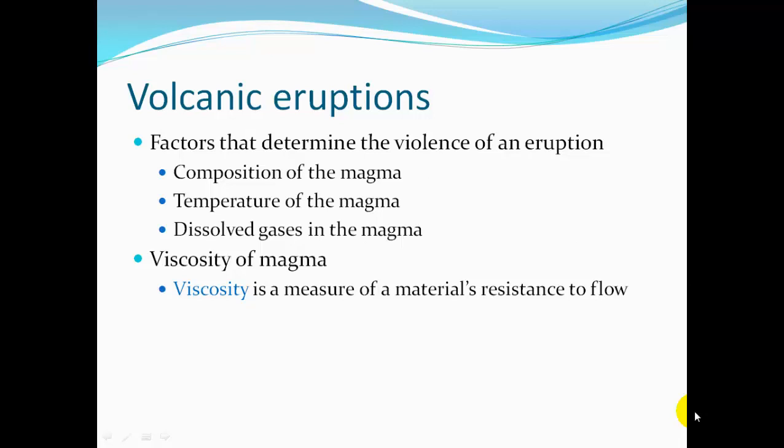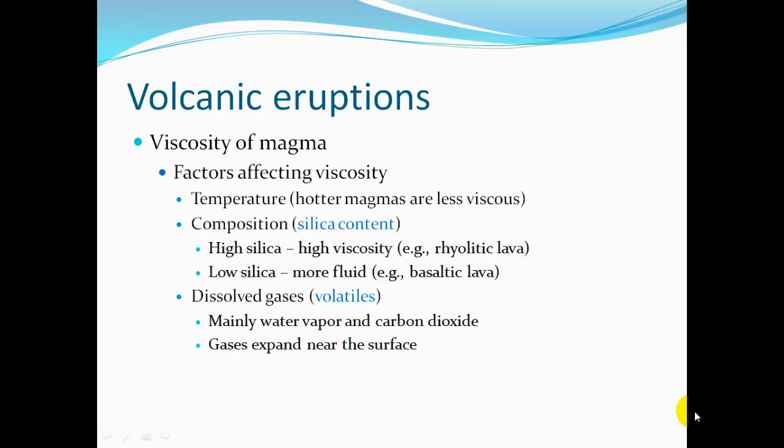The viscosity of the magma is a measure of the material's resistance to flow. Factors that affect viscosity include temperature — hotter magmas are less viscous, meaning less resistant to flow. Composition, specifically silica content, also matters: high silica means very viscous, very resistant to flow, like rhyolitic lavas. Low silica, or more fluid, are your basaltic lavas.